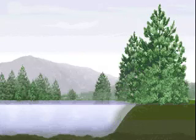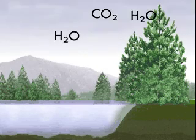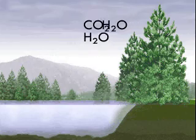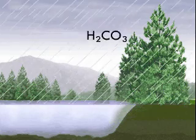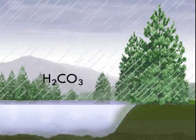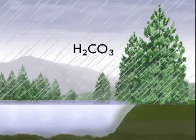Normal rain is somewhat acidic, having a pH of about 5.6. This acidity results from carbon dioxide in the atmosphere reacting with water vapor to produce carbonic acid.